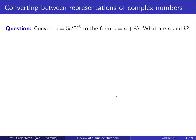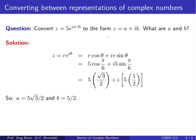Often you may need to convert between these two representations. For example, suppose you have z equals 5 times e to the i pi over 6, and you want to convert that to the form z equals a plus ib. Using the identity, z equals r cosine theta plus i times r sine theta. r is equal to 5 and theta is equal to pi over 6. Evaluating cosine pi over 6 gives square root of 3 over 2, and sine of pi over 6 is a half. So we get 5 times square root of 3 over 2 plus i times 5 over 2. Thus a equals 5 square root of 3 over 2 and b equals 5 halves.